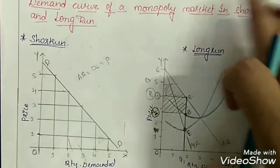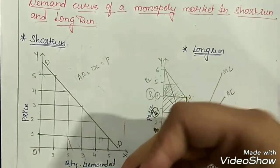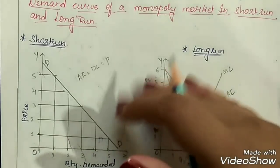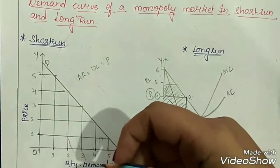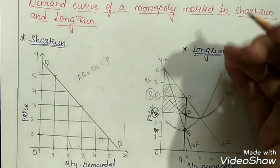This was all about the monopoly market — its features, causes, differences, and demand curve of the monopoly in short run and long run. If you found this helpful, please hit the like button. I will see you in my next videos. Till then, happy learning.